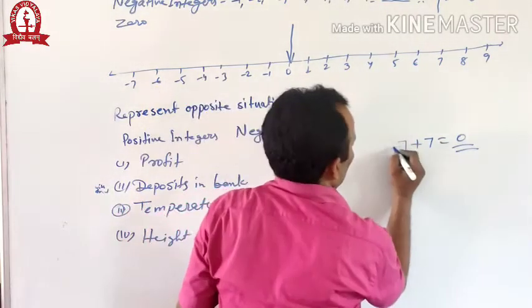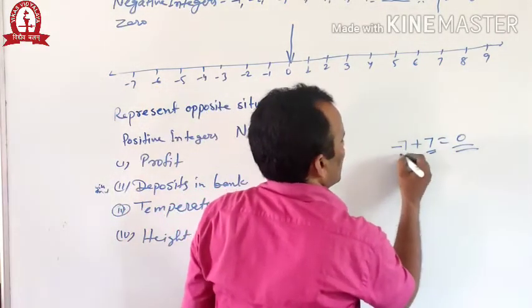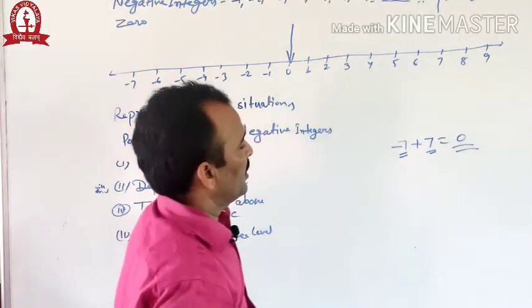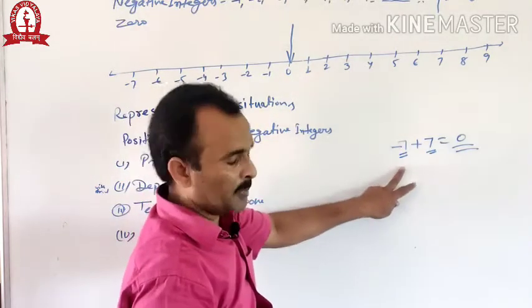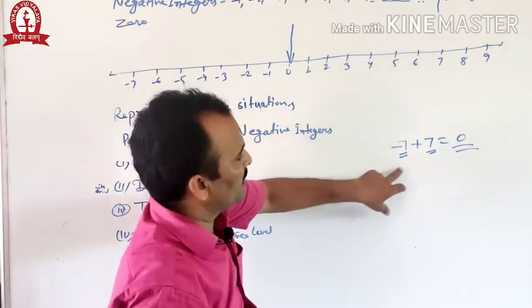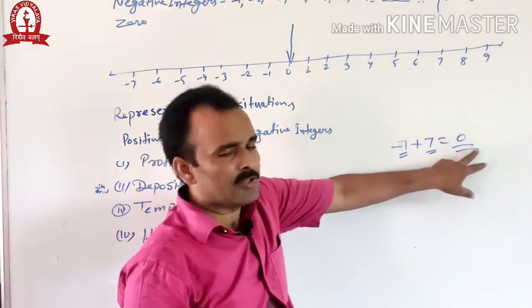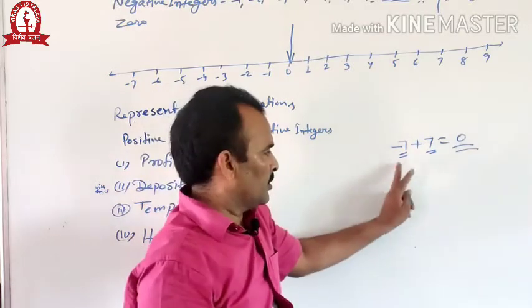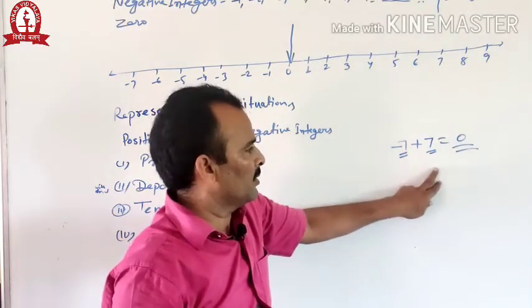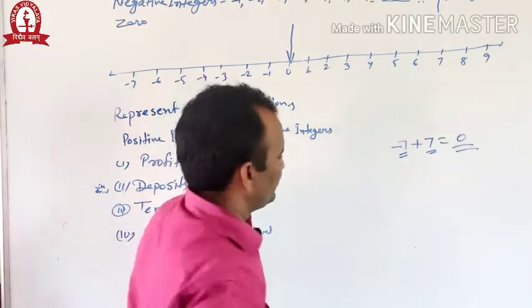In other words, seven rupees income and seven rupees expenditure — the result is zero. So both integers are opposite to each other.